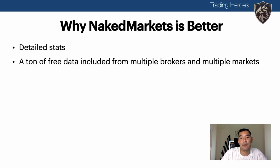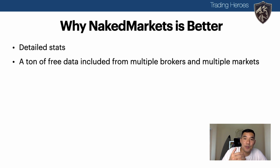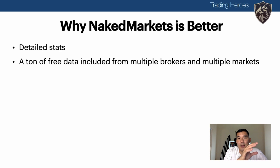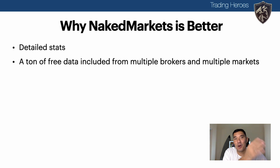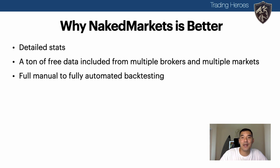Naked Markets gives you a ton of free data from multiple Forex brokers and for multiple markets. With Forex Tester, you have to pay either $30 a month or $500 upfront to get the premium data. Naked Markets gives you very similar data included in the purchase price. On top of the Forex data, you also get data from stock indexes, futures, individual stocks, and cryptocurrencies. In the major pairs, data goes back to about 2003; for crosses, probably around 2006; and for exotics, you'll get less. But this data is totally free and included in the purchase price.